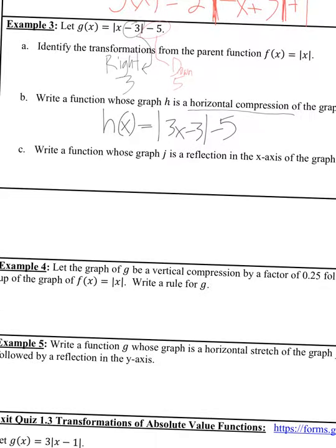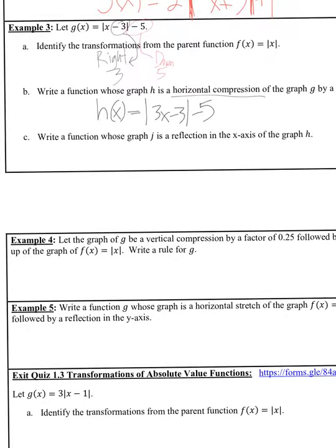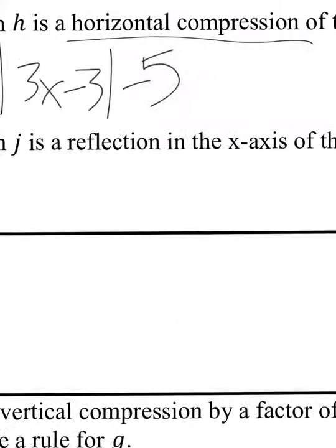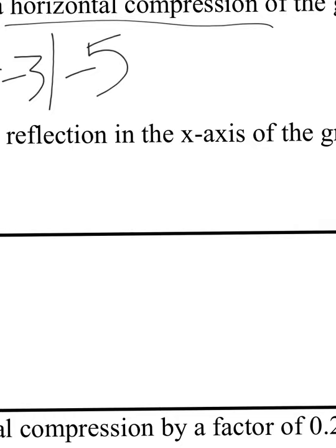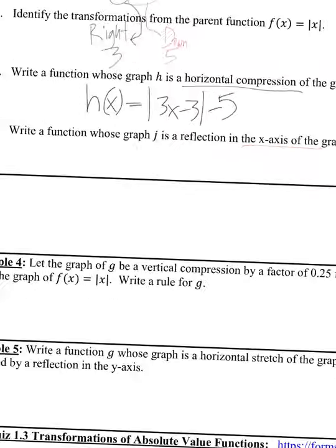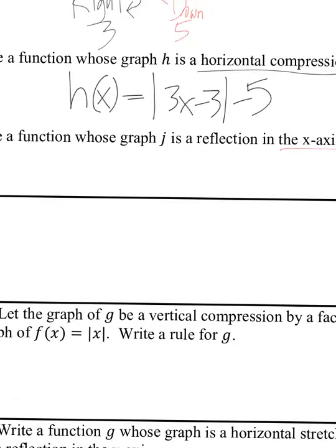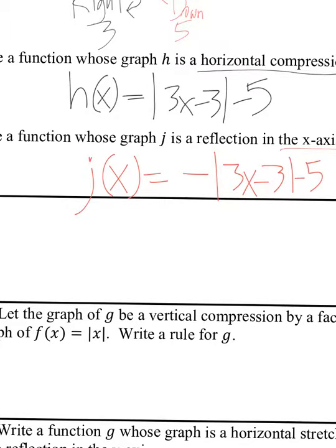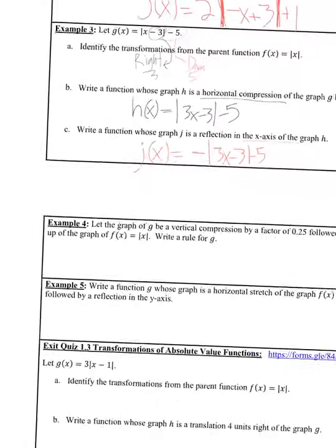Write a function whose graph J is a reflection in the X-axis of graph H. An X-axis reflection means a negative on the outside. So J of x equals negative absolute value of 3x minus 3, minus 5.